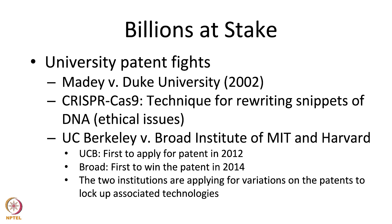Recently, we had the CRISPR-Cas9 technology, which is used for rewriting snippets of DNA — what we commonly call gene editing. This has raised quite a lot of ethical issues, more than technology-based issues, regarding what could be the outcome and the costs involved in editing genetic material, because most of the time the technique is used at the embryonic stage, and researchers are not able to predict what could be the ultimate consequence of these edits.